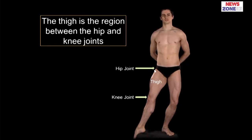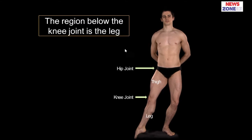So let's start. The thigh is the region between the hip and the knee joints. Here is the hip joint, which is present between the acetabulum of the hip bone and the head of the femur, and over here you can see the knee joint. So thigh is the region between the hip joint and the knee joint. Thigh is a quite thicker portion of the lower limb. The region below the knee joint is called the leg, which extends from the knee joint to the ankle joint. After the ankle joint, the most distal part is called the feet.